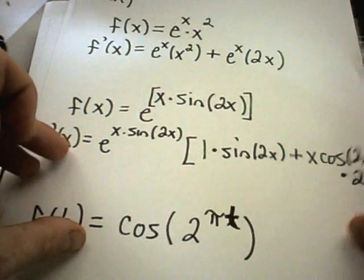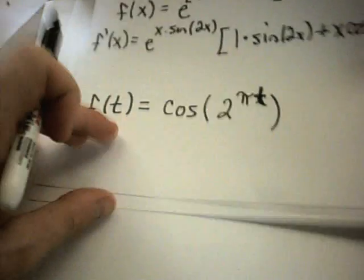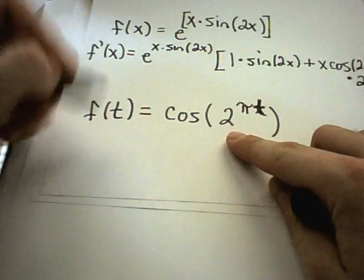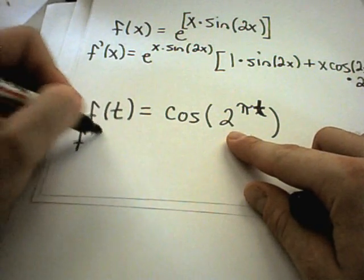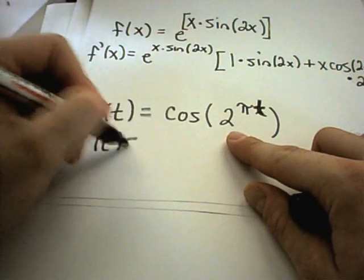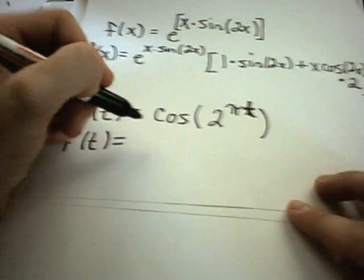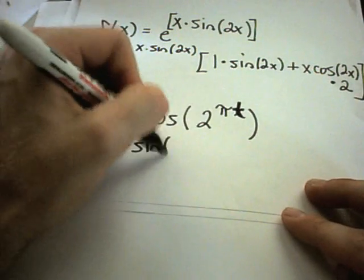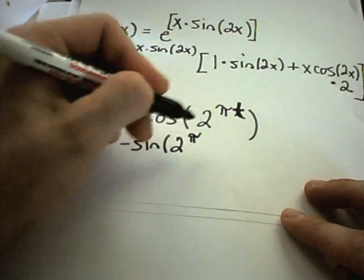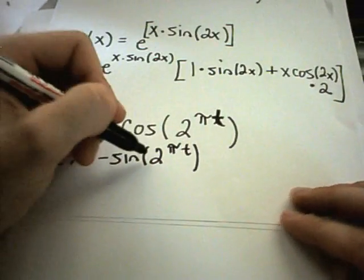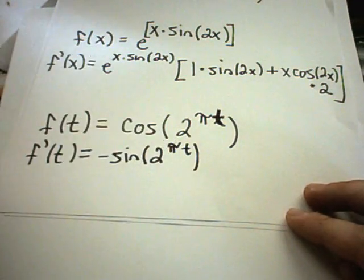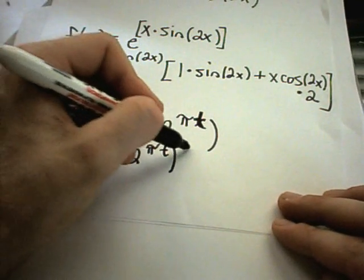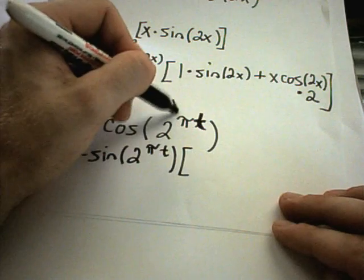So one more example here, one without e. So on this one, I'm going to have to use the chain rule. The derivative of the outside part, I'll get negative sine. I'll leave the inside part alone. So I'll get negative sine raised to the 2 pi times t. But now I have to multiply by the derivative of the inside stuff.